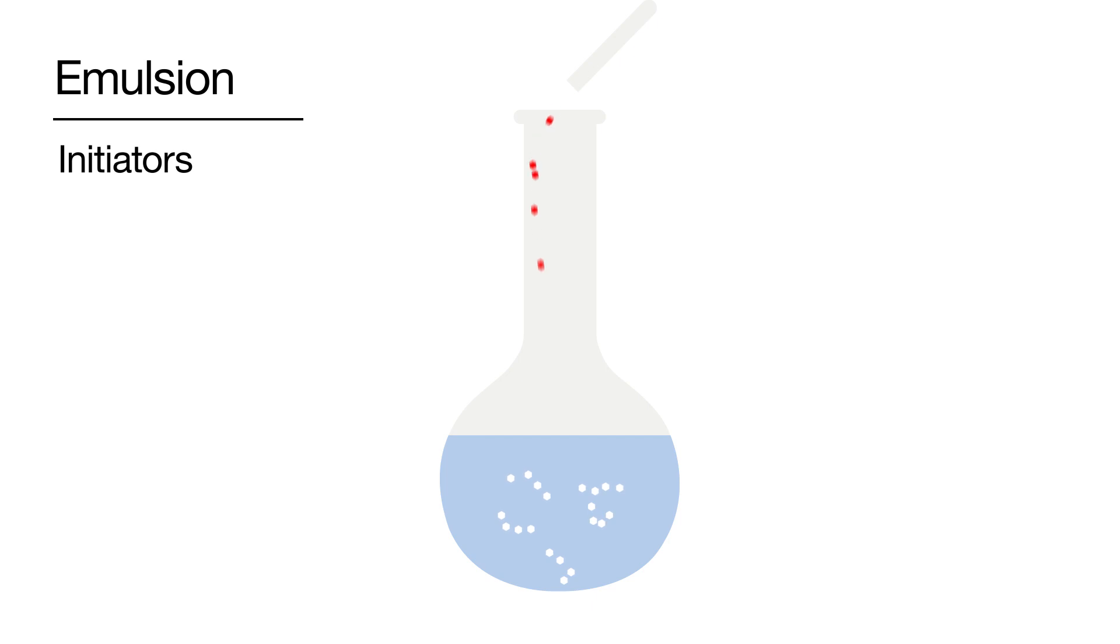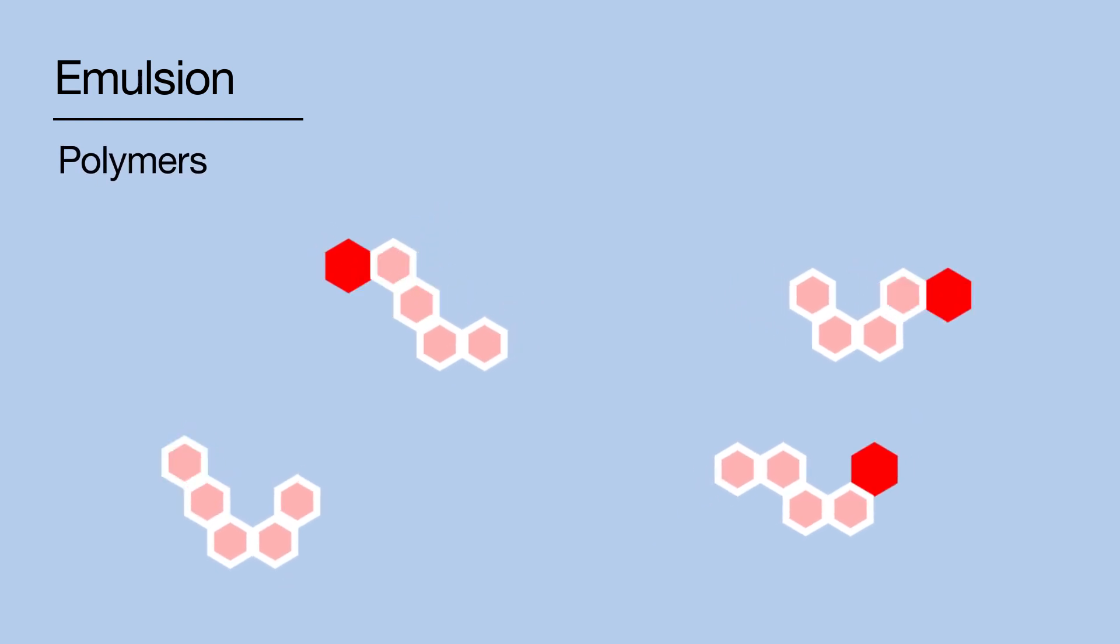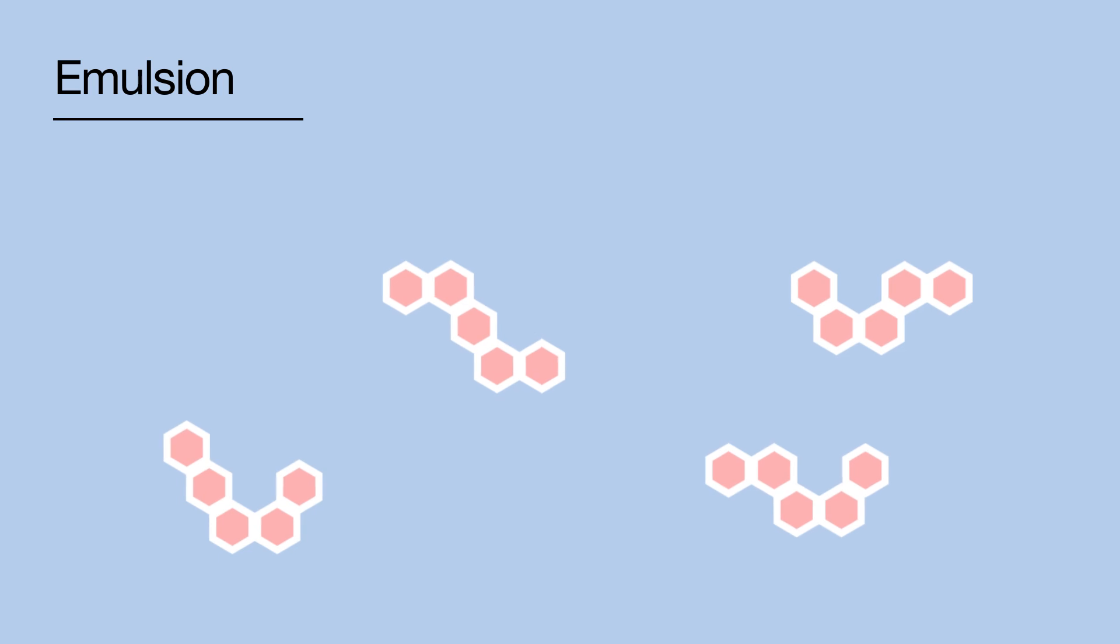initiators are added, which bond the monomers together to form polymers, which are larger molecules. During this process, we are able to engineer the polymers to make sure that the adhesive has the desired properties and performance.